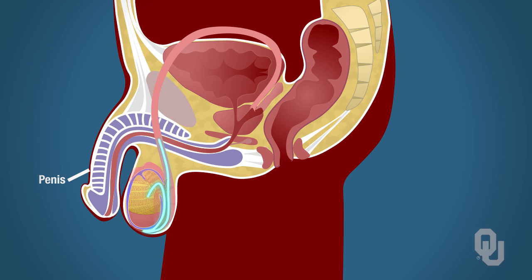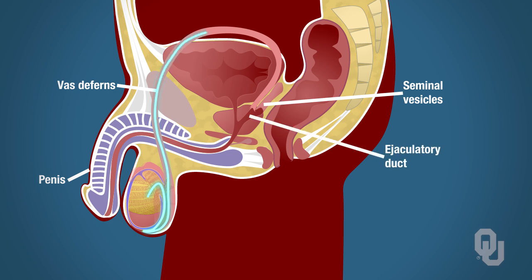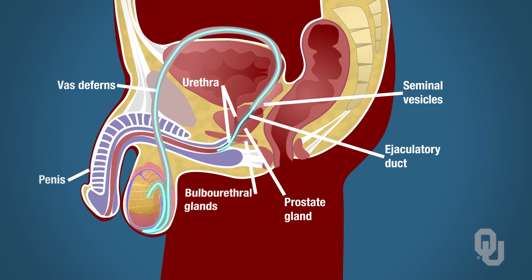Now the sperm are in the vas deferens. The vas deferens connects with the seminal vesicles to form the ejaculatory duct. At this point, the sperm is mixed with fluid that came from the seminal vesicles. The ejaculatory duct penetrates through the prostate gland to join the urethra. As such, the sperm wind up in the urethra, which receives substances from the bulbal urethral glands. Thus, both urine and sperm are in the urethra. So that was just the pathway that sperm take from the seminiferous tubules to the urethra.